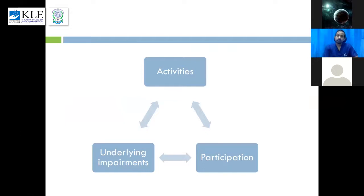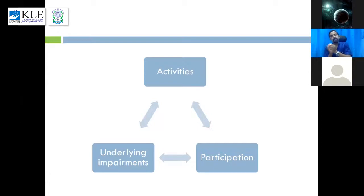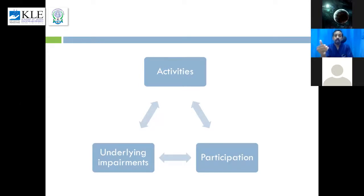In assessment with Bobath, we follow the ICF model: participation restriction, activity limitation, and underlying impairment. When a patient comes, you ask what activity they participated in before the stroke and whether they can participate now. For example, if the patient is a housewife who cooked, you assess whether she can do cooking now. If not, that is a participation restriction.